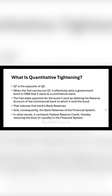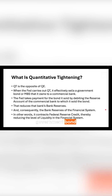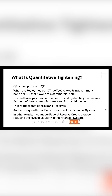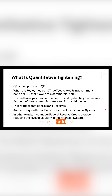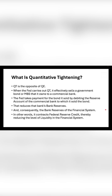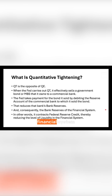Quantitative tightening is the opposite of quantitative easing. When the Fed carries out QT, it effectively sells a government bond or a mortgage-backed security that it owns to a commercial bank. The Fed takes payment for the bond it sold by debiting the reserve account of the commercial bank to which it sold the bond. That reduces that bank's bank reserves and, consequently, the bank reserves of the financial system.